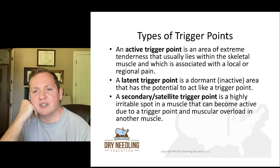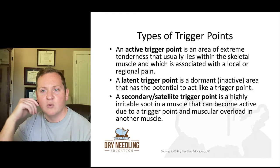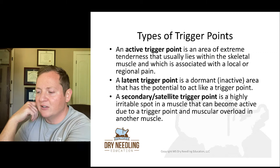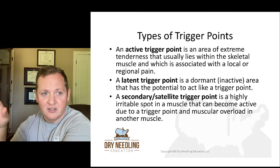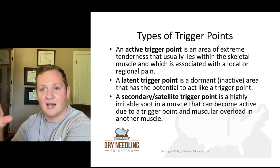Travell and Simons had a few definitions for trigger points — active, latent, and secondary satellite trigger points. An active trigger point is an area of extreme tenderness that usually lies within the skeletal muscle and is associated with local or regional pain. A latent trigger point is a dormant or inactive area that has the potential to act like a trigger point. If you feel a knot and it's not tender, that's potentially a latent trigger point; if it's super tender, that would most likely be an active trigger point.